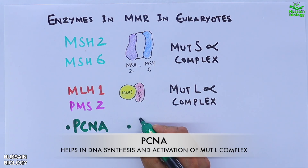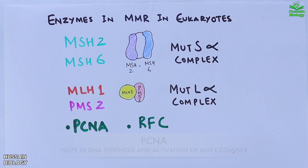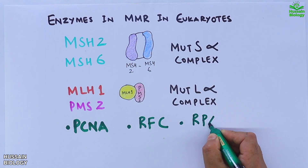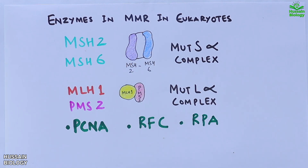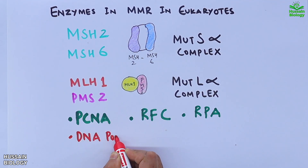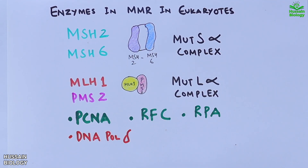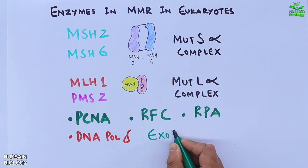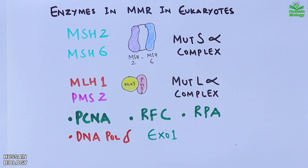Furthermore we have RFC, which recruits PCNA. RPA is an enzyme that binds single-stranded DNA and increases stability. Then we have DNA polymerase delta, which synthesizes the new DNA strand. EXO1 catalyzes the removal of nucleotides, and ligase 1 finally ligates the DNA strand.